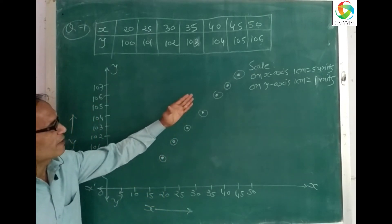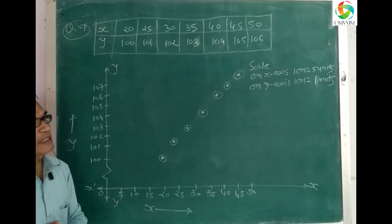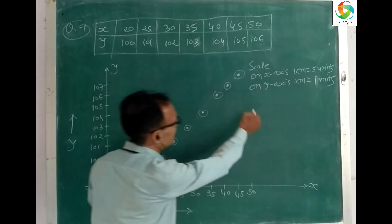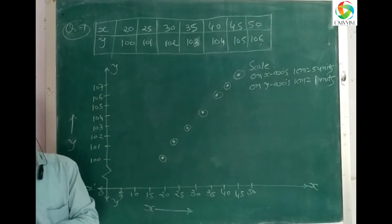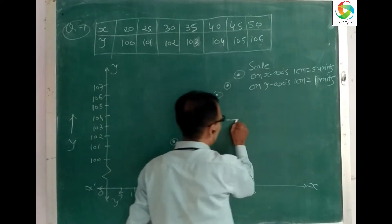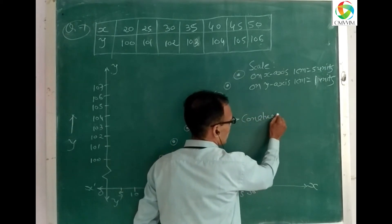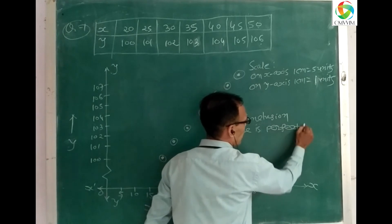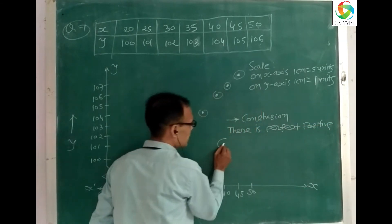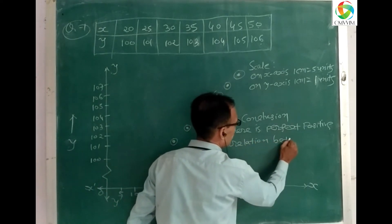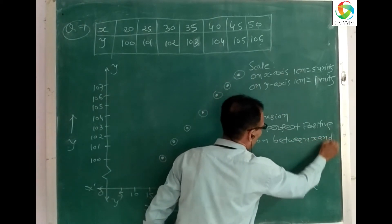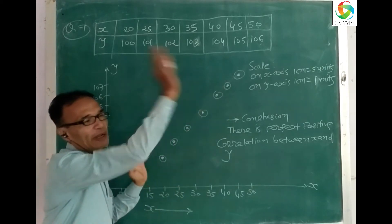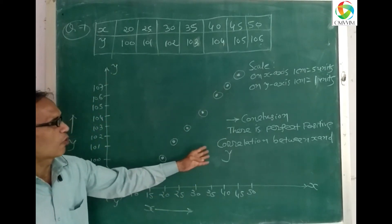All points are on one straight line and go from left to right in increasing order. Therefore, we say that there is perfect positive correlation between x and y. The conclusion is: there is perfect positive correlation between x and y.